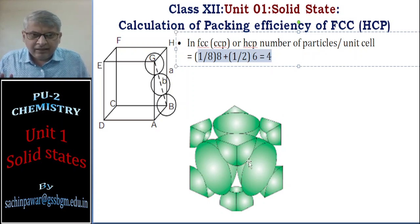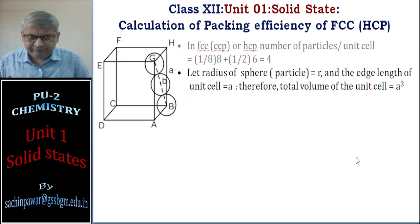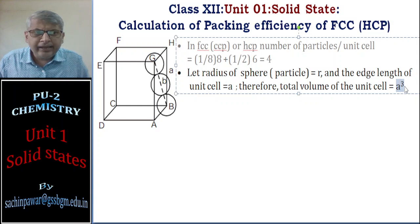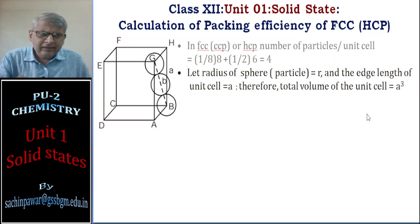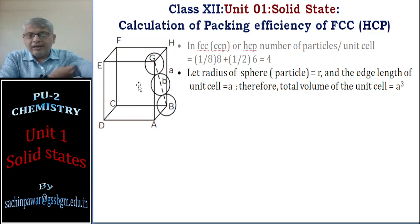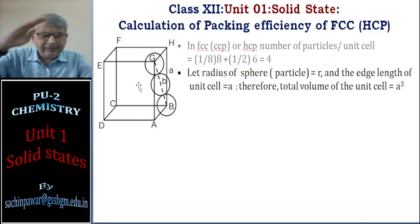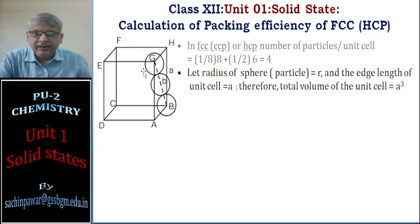Let the radius of every sphere be r and the edge length of the unit cell be a. The volume of the unit cell is a³. We now need the relation between a and r, so we observe the FCC diagram carefully and express a in terms of r, allowing the r terms in numerator and denominator to cancel.